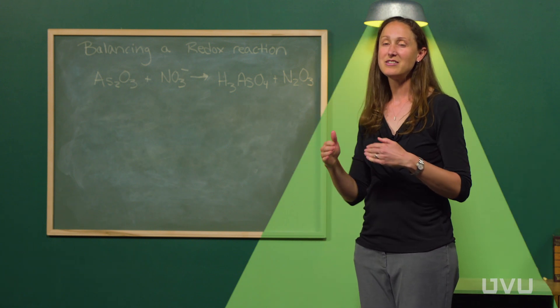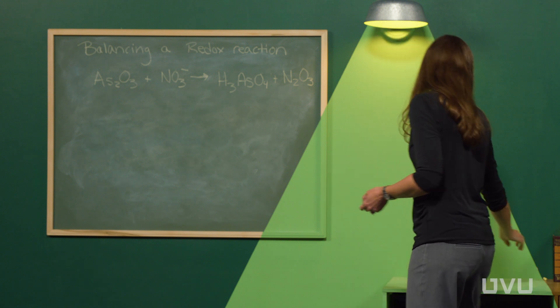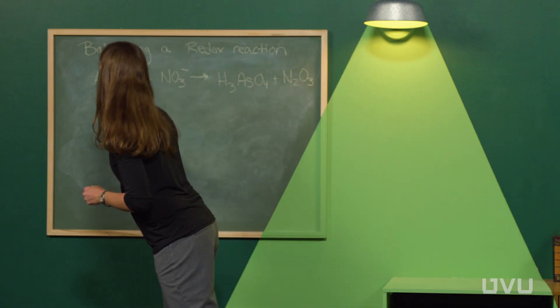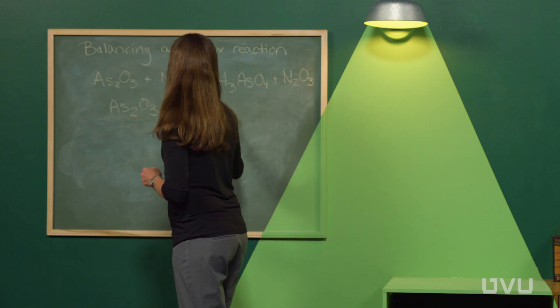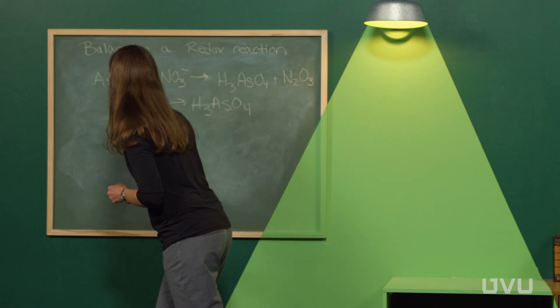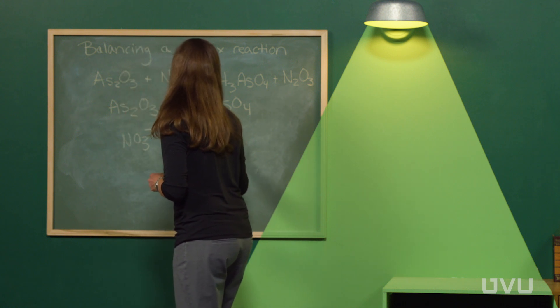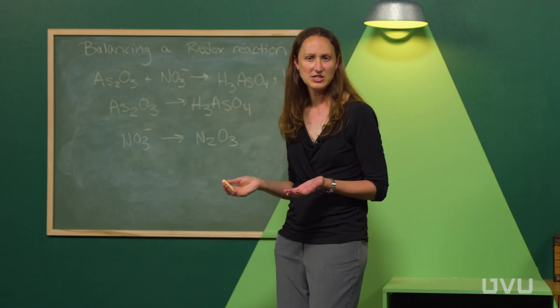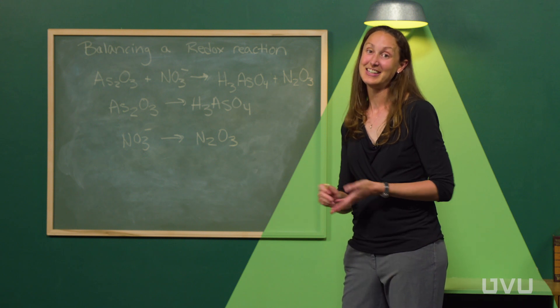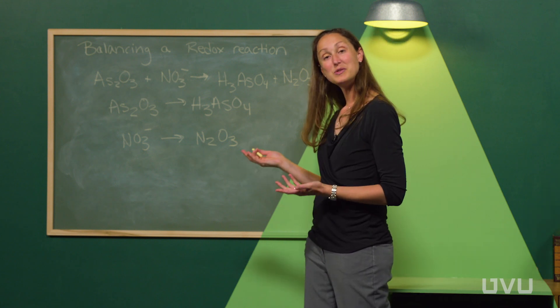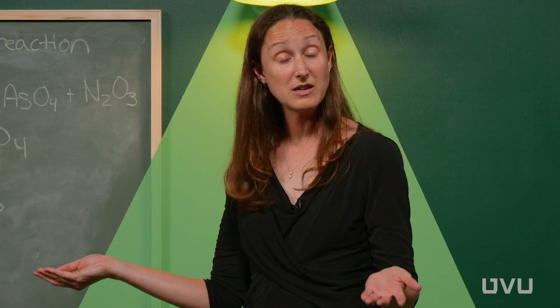After writing the half-reactions down, we determine which is oxidation and which is reduction — you must have one of each, or you don't have a redox reaction. The electron must be released and then accepted. To figure this out, we look at oxidation states — a formalism used to determine what's being reduced and what's being oxidized. We examine each compound and consider whether it has a charge.